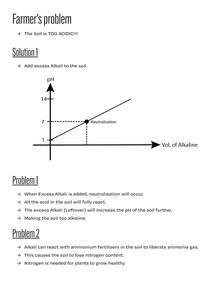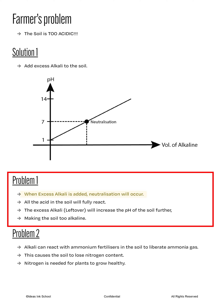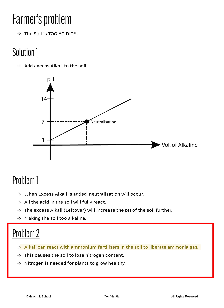This gives rise to two problems. Problem 1: when excess alkali is added, all the acid in the soil will be fully neutralized. However, the alkali that is left over will inevitably cause the pH of the soil to increase further past the neutral pH of 7. As a result, the soil ends up being too alkaline and the green beans will not grow. Problem 2: when alkali is added, it will react with any ammonium fertilizers present in the soil. This reaction releases ammonia gas, and thus the soil loses its precious nitrogen content and the nutrient level of the soil decreases.